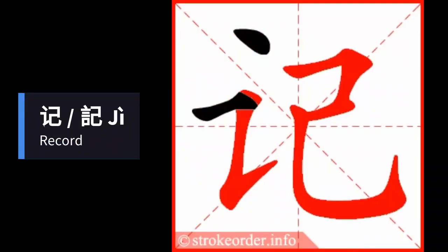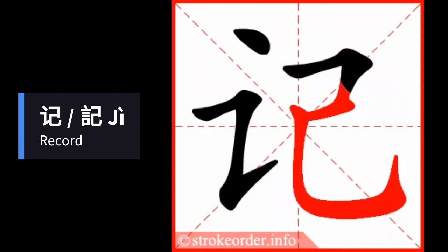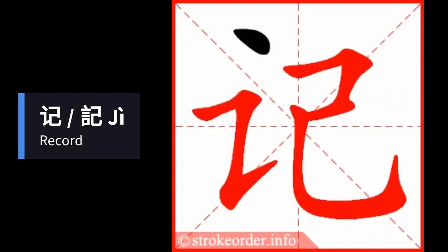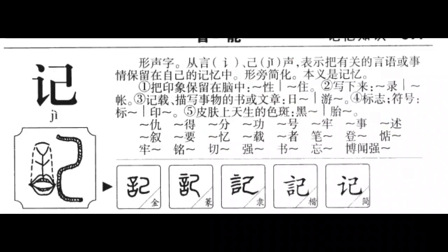In today's video, we'll teach you the Chinese character for record, pronunciation: jì. This is a fun character in the Chinese language because the character jì is a combination of the characters for speech and oneself, in this case to record and remember for oneself. This makes it easier to learn.